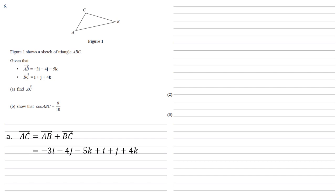Bringing together the like letters: minus 3i plus i is minus 2i, minus 4j plus j is minus 3j, and so on. We get that AC is equal to minus 2i minus 3j minus k.